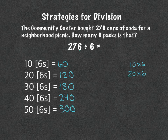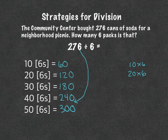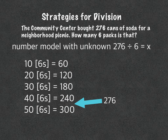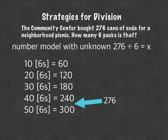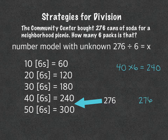So our number, 276, we know is somewhere in this range. We used our extended multiplication facts — 10 times 6 is 60, 20 times 6 is 120 — and kept going until we found the range. We know 276 is between 240 and 300, so we take 40 times 6, which equals 240. Then we find what's left: 276 minus 240.